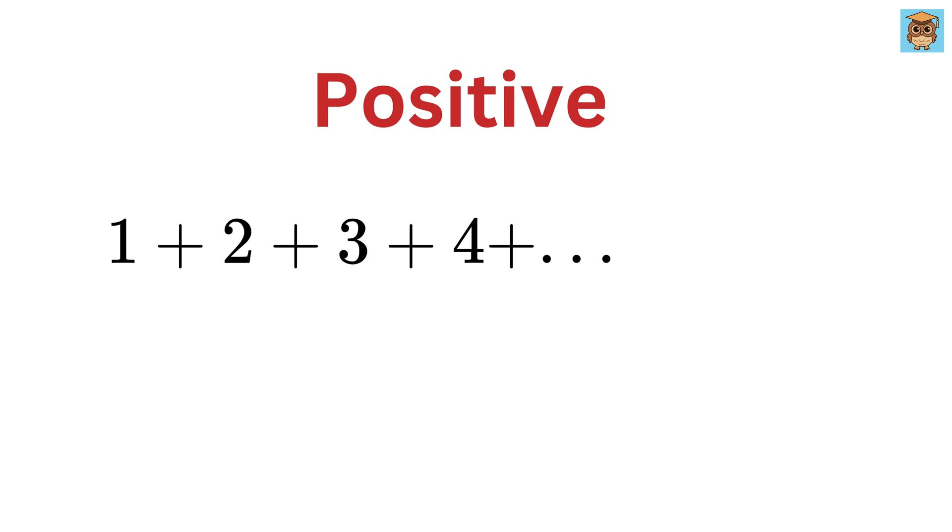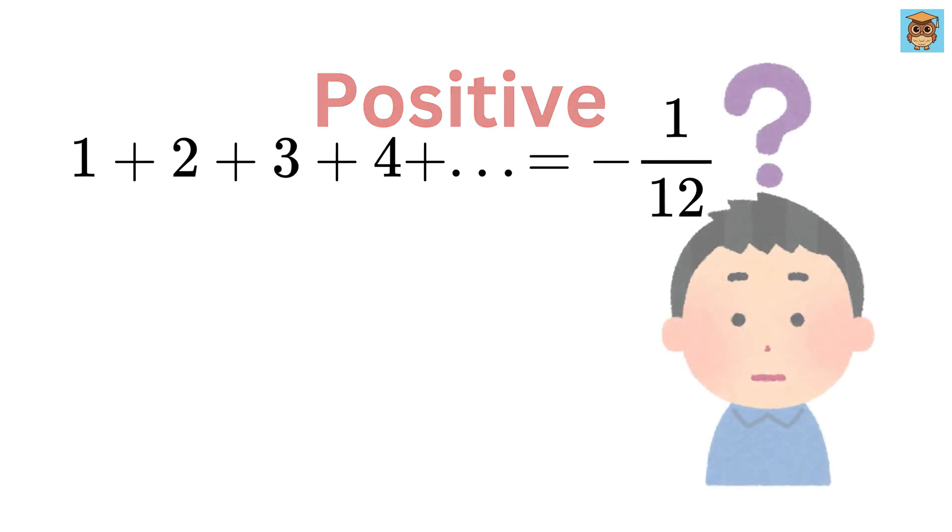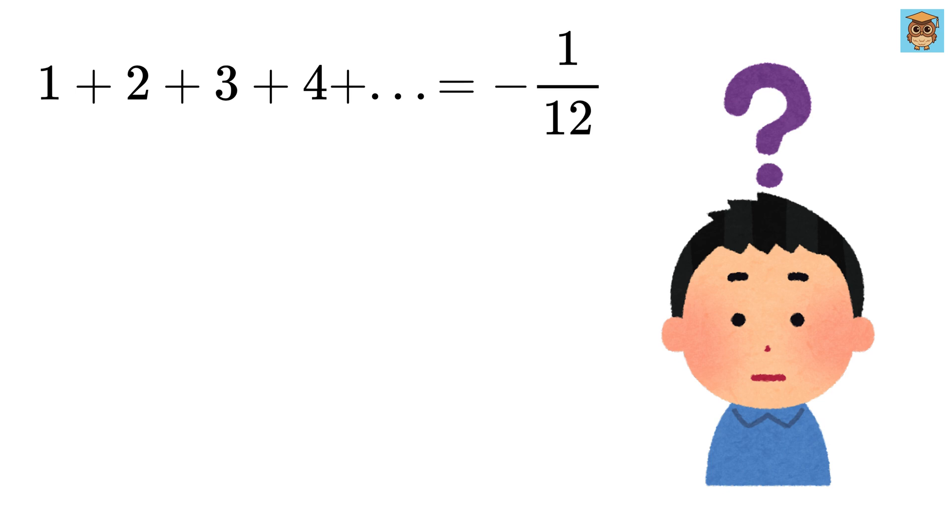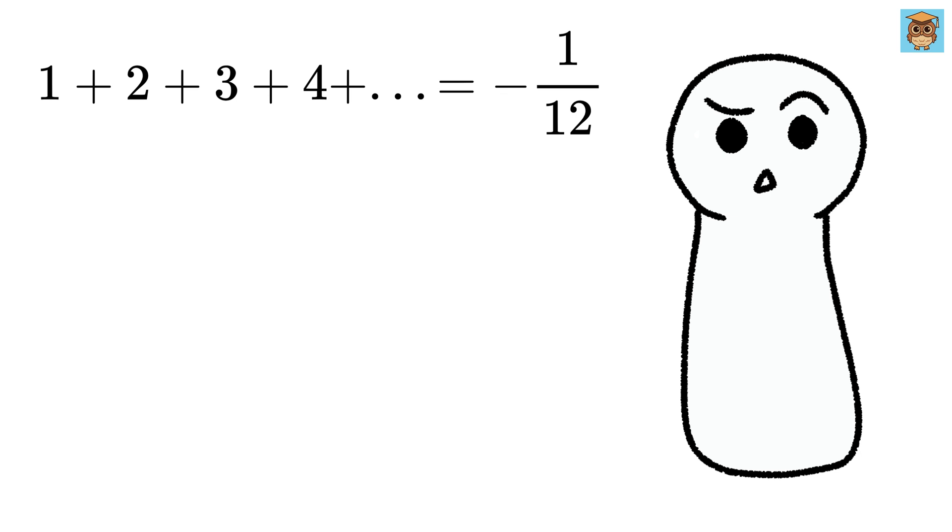But Ramanujan did something shocking. He found a way to assign a surprising and finite value to this infinite sum. It is none other than minus 1 over 12. At first, this result seems crazy. How can adding bigger and bigger numbers lead to a small negative fraction? Let us find that out.